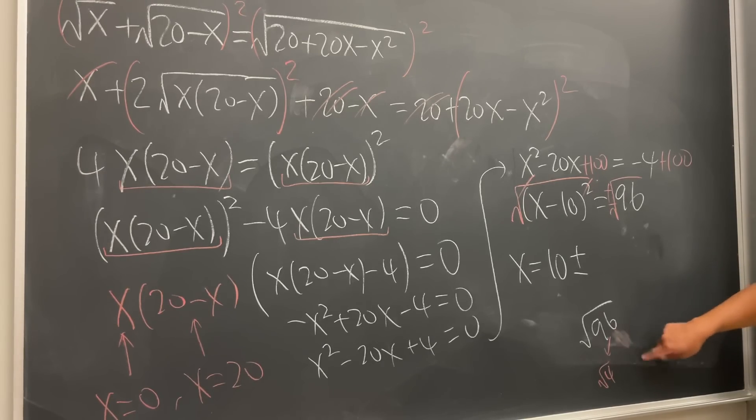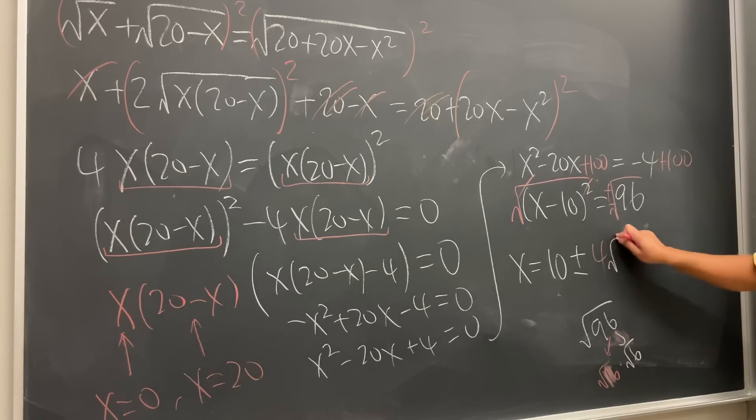4 times 24. Wait, what? No, 16. 16 is better. So 16 and also 6. So this right here, I'm just going to write it as 4, and that right here is square root of 6.